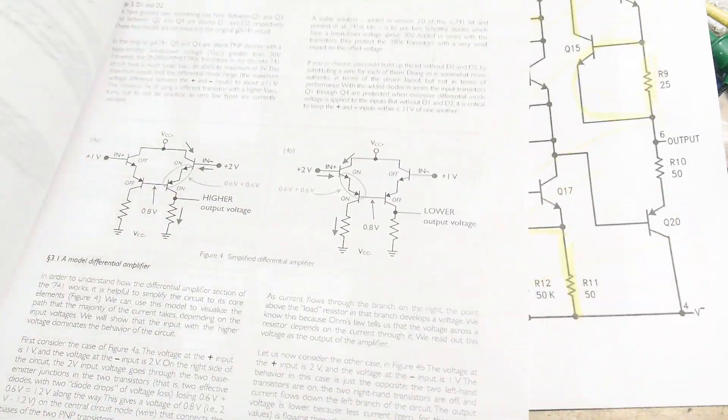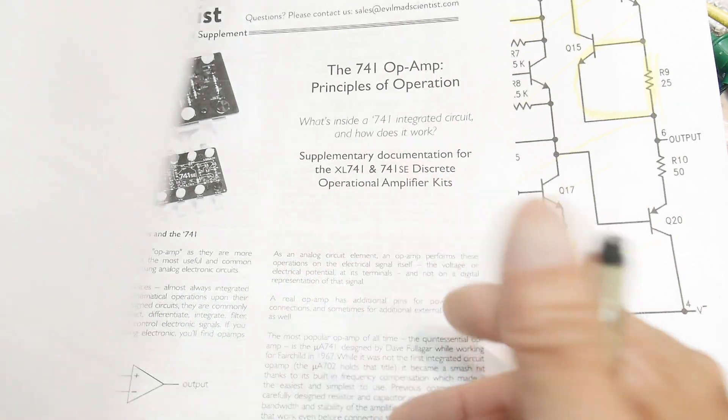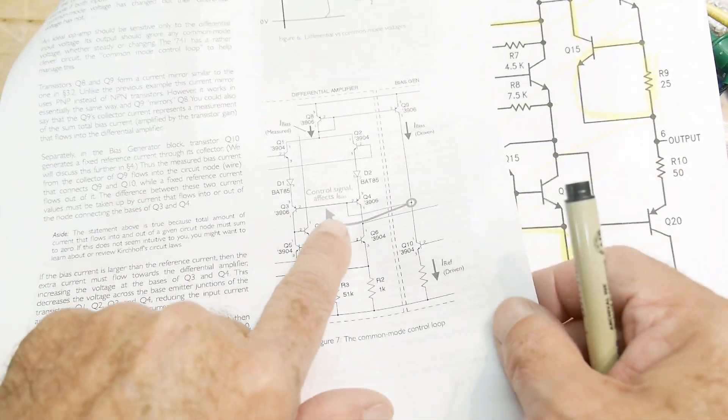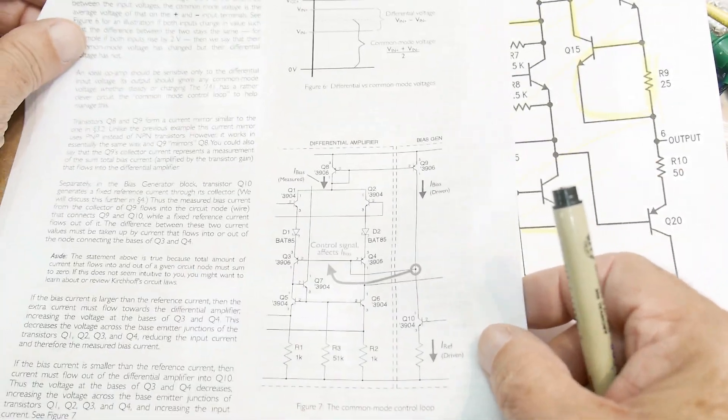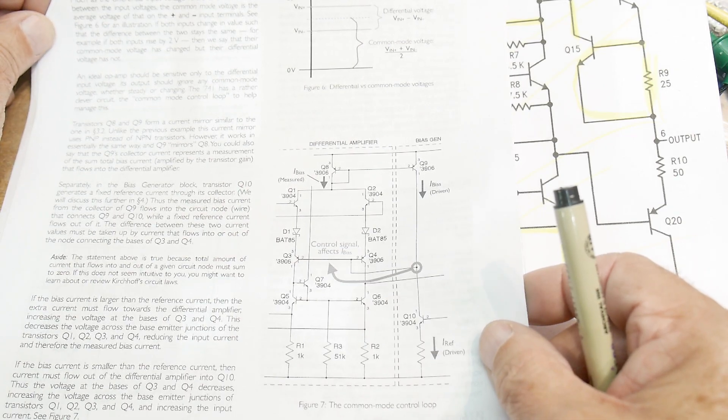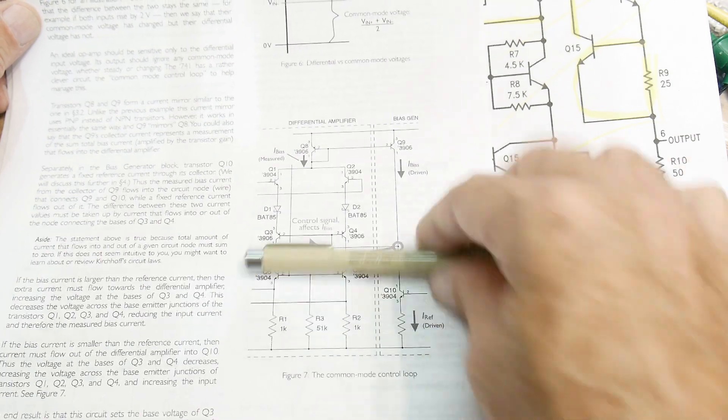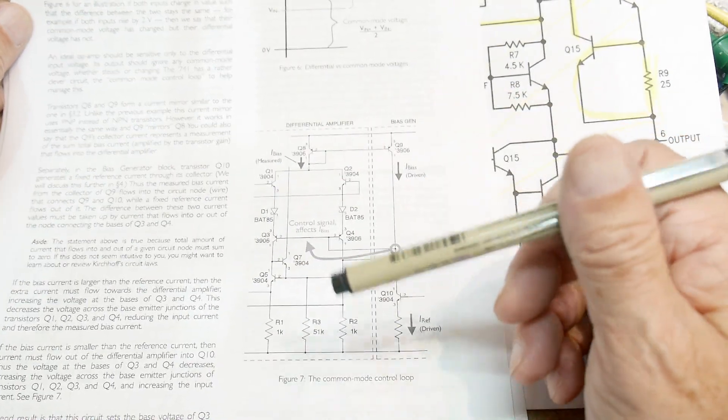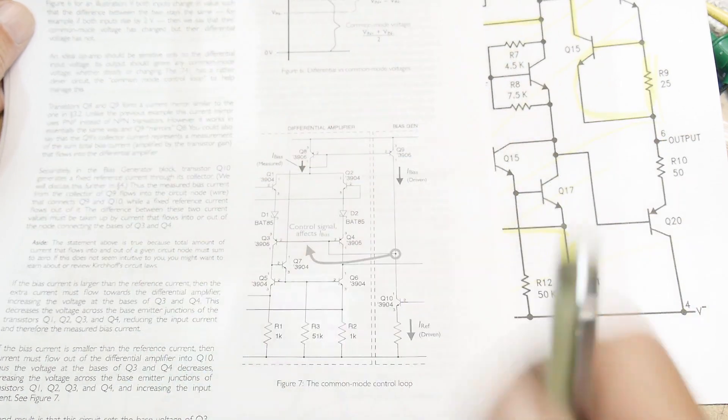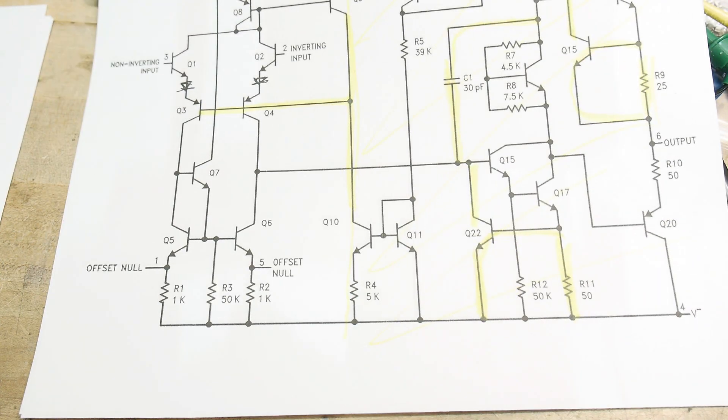I showed that there's this document that they wrote, principles of operation. They do go through this floating node here. They call it a common mode control loop. And I don't think that's a great title for it. It's this floating thing. And they do talk about it here. So you can read about it all you want.